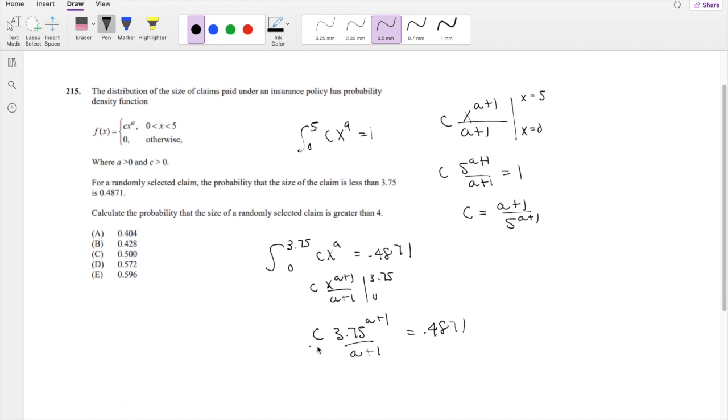All right, because we know c is this number right here, we can just plug that in. (a+1) over 5^(a+1) times 3.75^(a+1) over (a+1) is equal to 0.4871. The (a+1)'s cancel.